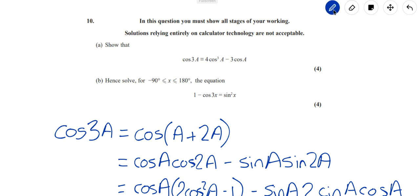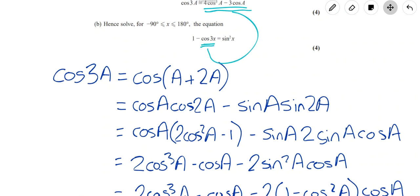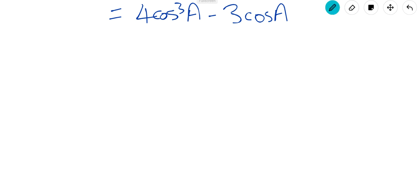Now, let's have a change of colour and a change of question part. Part b, hence solve. If it says hence in the question, that means you're going to use what you used in part a. So, solve this equation. What have we got in here that's from part a? We've got a cos of 3x just here. So, because we've just proved cos of 3 times something is this, I think we need to substitute that in. So, we're going to do 1 minus all of that stuff equals sine squared x. And I'll just change the a's into x. And then we can solve from there. So, I'm just going to move down here. 1 minus 4 cos cubed x minus 3 cos x, and then equals sine squared on that side.